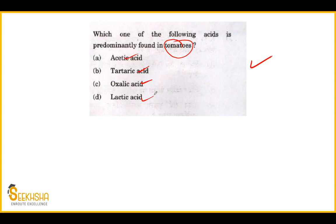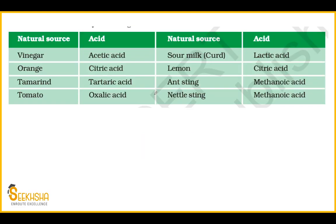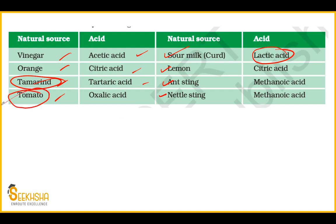The natural sources and acids table: vinegar contains acetic acid, orange contains citric acid, tamarind contains tartaric acid, tomato contains oxalic acid, sour milk contains lactic acid, lemon contains citric acid, ant sting contains methanoic acid, and nettle sting also contains methanoic acid. This is exactly the table taken from NCERT. The first time the question was asked about ant sting; now it is asked about tomato. So the answer is oxalic acid. This is a very important table — direct questions are asked from it in general science.